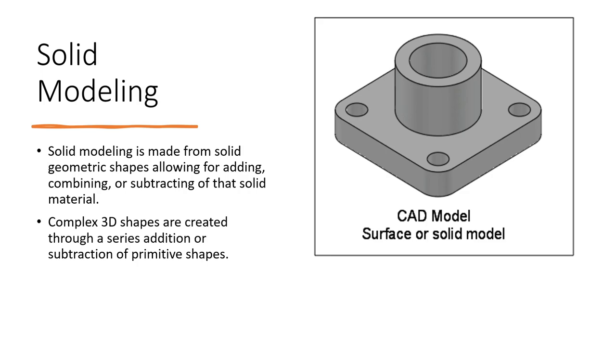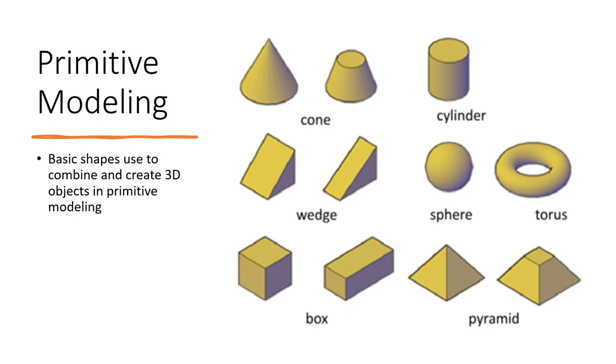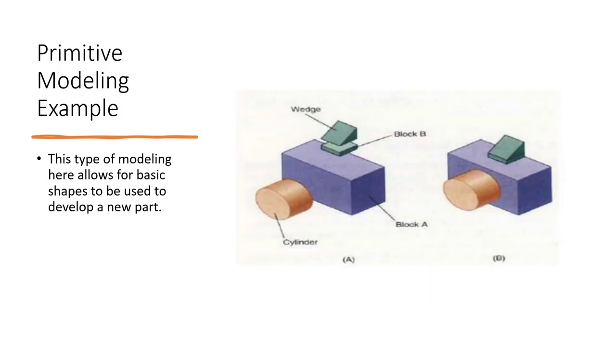Looking at some of those primitive shapes, what are the typical cuts and extrudes that we typically do? Cones, cylinders, wedges, spheres, boxes are really the main types—you know, pyramids and toruses. These are the typical simple shapes that really create everything else for the most part. Basic shapes used to combine and create 3D objects in a primitive modeling atmosphere.